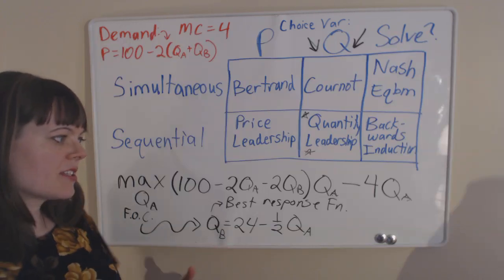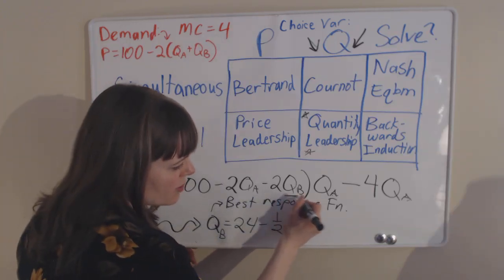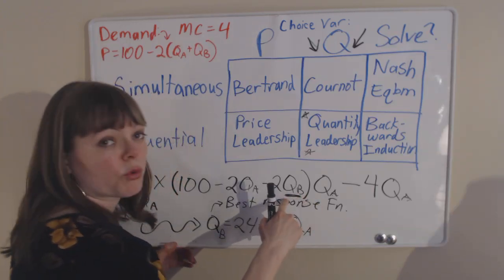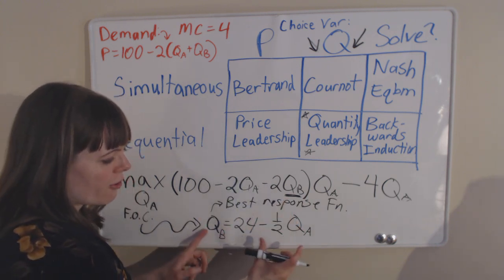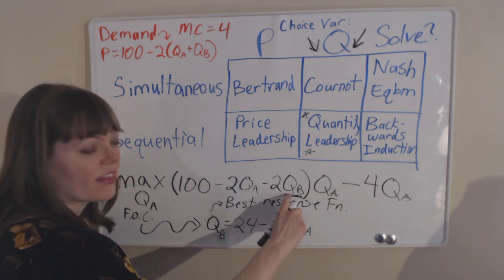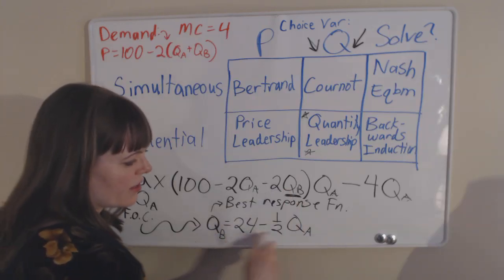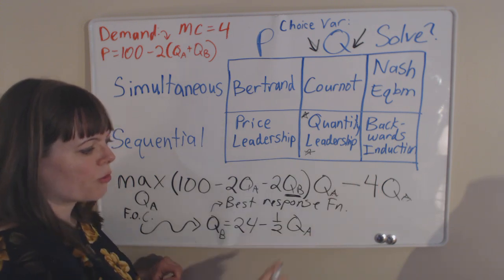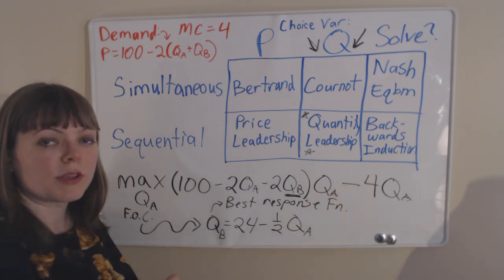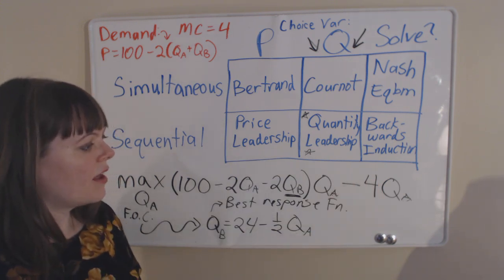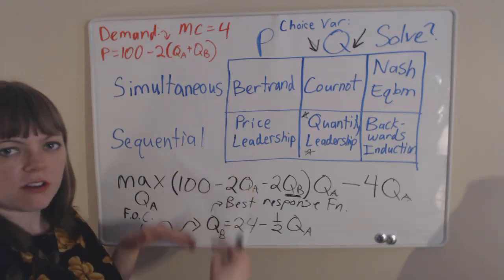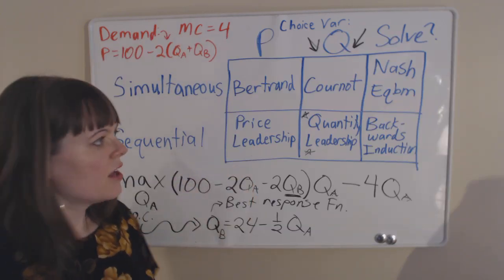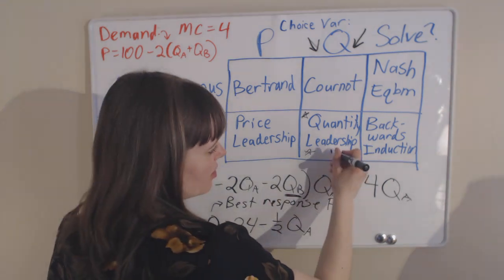But if we're using backwards induction, we actually know some information about how firm B will respond. So we can plug firm B's best response function in there. The entire maximization problem will be just in terms of QA. There will be no QBs in that problem. And then firm A will solve that, and that will give them an actual solution. That's how we deal with quantity leadership.